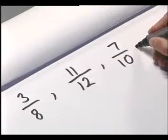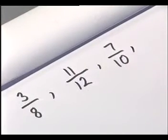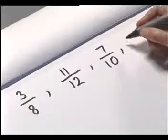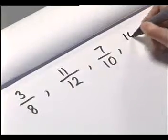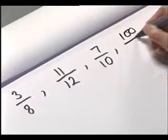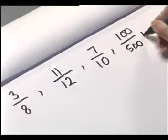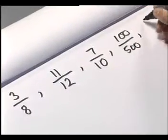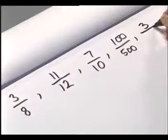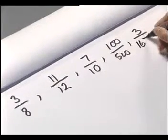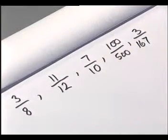And we can have any numbers in our fractions, so we could have a hundred five-hundredths, or three one-hundred-and-sixty-sevenths, and so on.